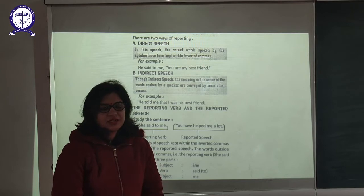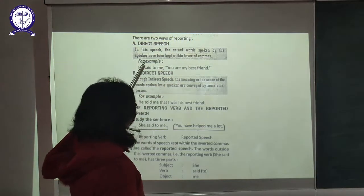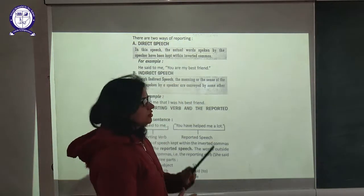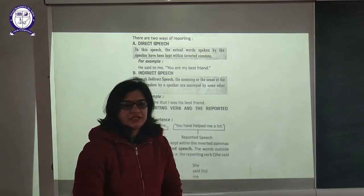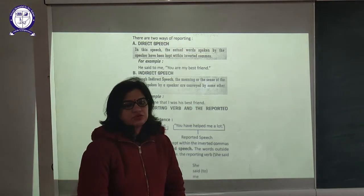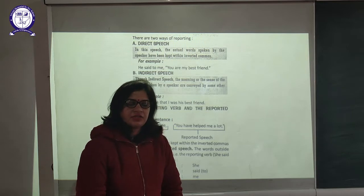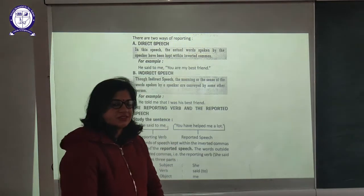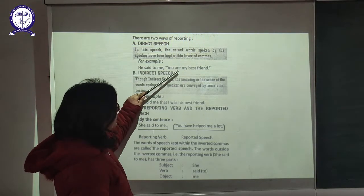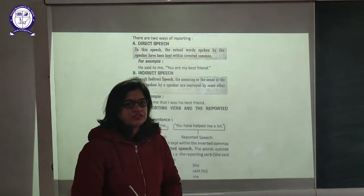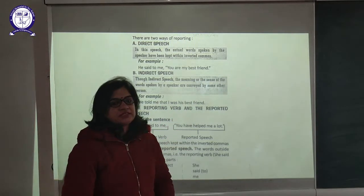So now let's see what is Direct Speech and what is Indirect Speech. In Direct Speech, the actual words spoken by the speaker have been kept within the inverted commas. If we are writing the same words as spoken by the speaker, that kind of writing is known as Direct Speech. For example, he said to me, 'You are my best friend.' Because 'you are my best friend' are the actual words of the speaker, they are kept between the inverted commas — this is known as Direct Speech.